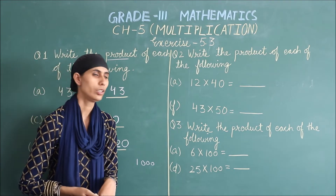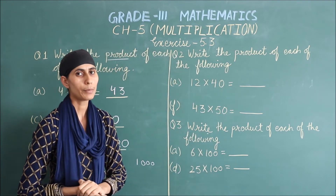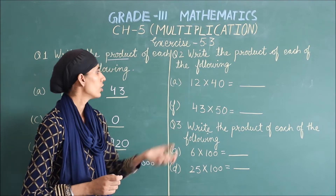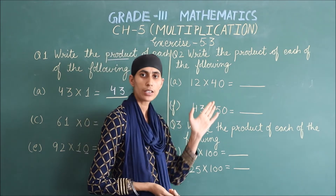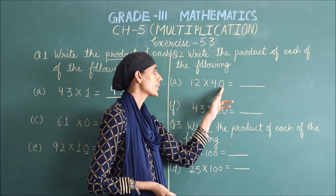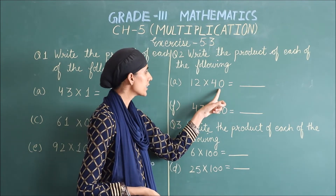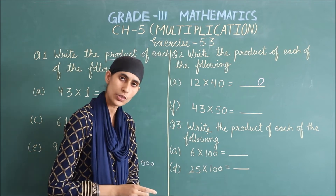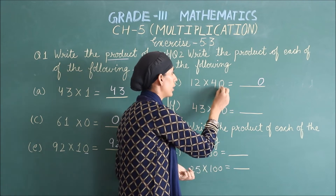Come to question number 2: write the product of each of the following۔ ہمیں product write down کرنا ہے، it means ہم multiply کریں گے۔ ہمارا A part ہے 12 multiply by 40. آپ نے دیکھا 40 کتنا بڑا number ہے۔ Multiplication easy کیسے کریں؟ آپ کے پاس number کے ساتھ 0 دیا ہوا ہے، تو 0 سے ہم multiply نہیں کریں گے — 1 zero ہے، وہ اکیلا یہاں write down ہو جائے گا۔